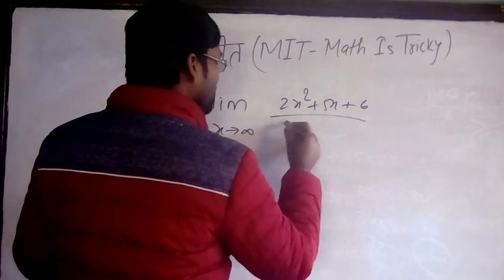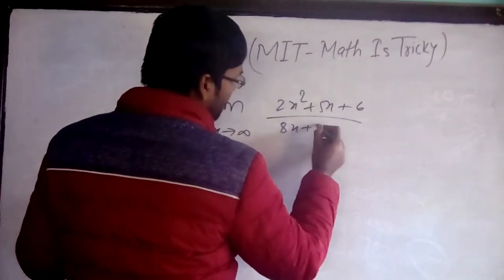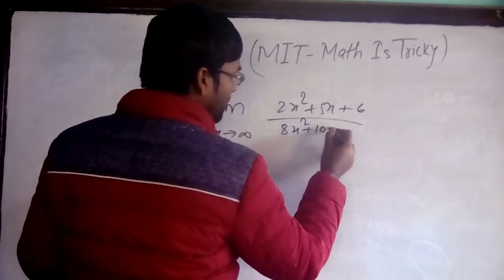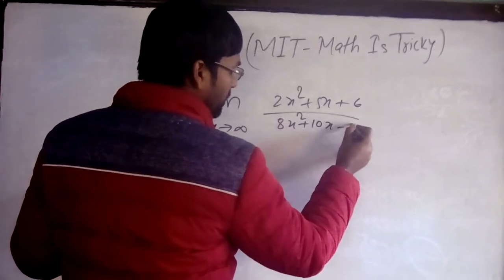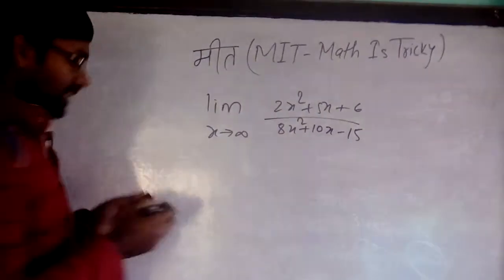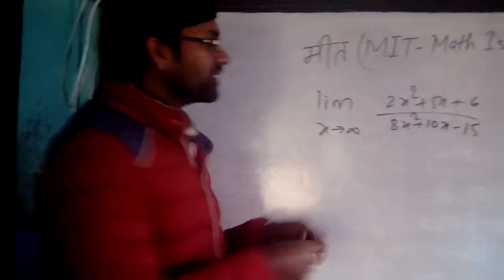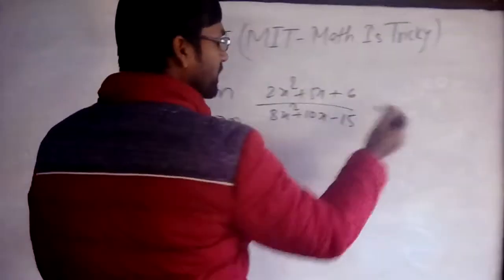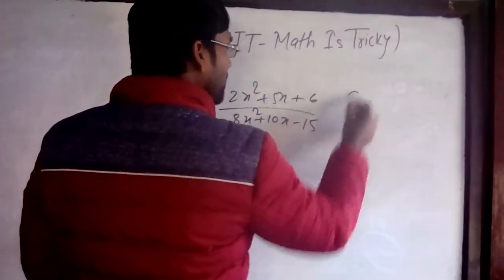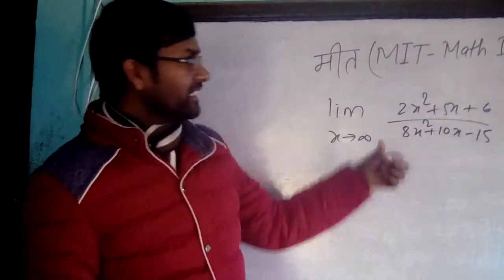Here, limit x tends to infinity: (2x² + 5x + 6)/(8x² + 10x - 50). If you have to find the limit of this function, according to the process it is in infinity by infinity form.